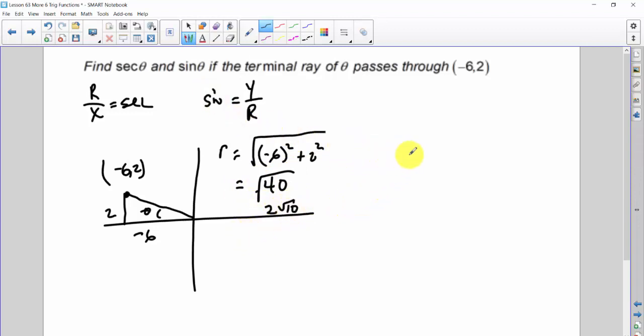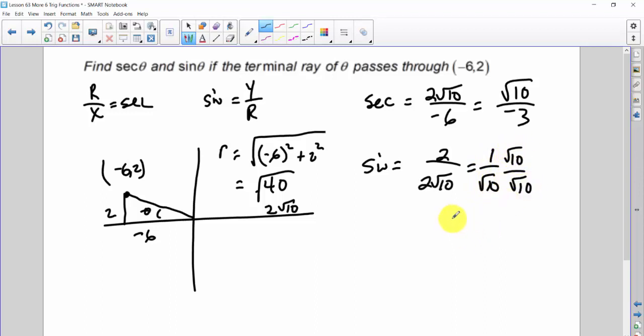And then we need an r value for the secant, which is 2 root 10, over the x value, which is a negative 6. That's going to reduce to root 10 over negative 3. And the sine value is equal to the y value, which in this case is 2, over the r value, which is 2 root 10. 2 is reduced, so that's 1 over root 10. And obviously we rationalize root 10 over root 10. And we get root 10 over 10. And in this case, it's positive. And we're done.